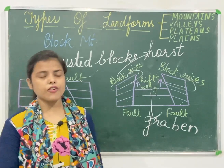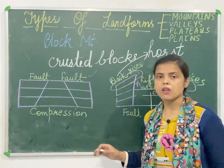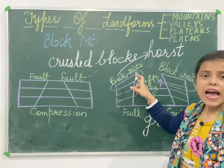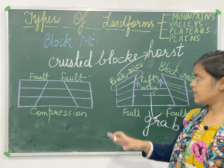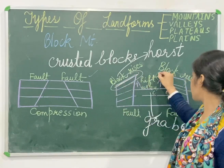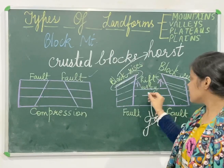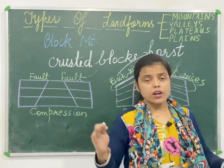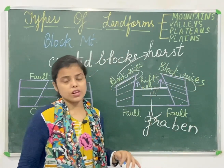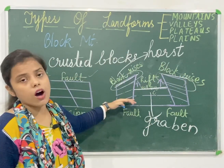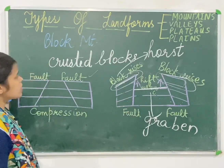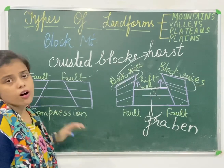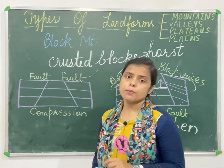Now the next is features. We will be discussing the features of block mountains. Block mountains have steep sides and a flat top, as you can see. The rift valley also has a flat bottom, with the steep sides of the block mountain on either side. So this is what block mountain is — it is a type of landform.